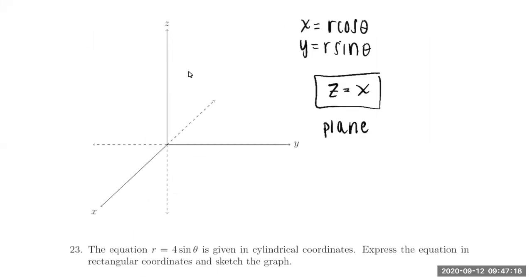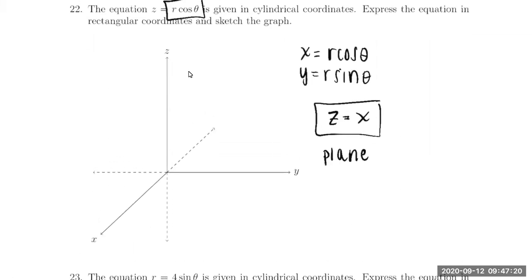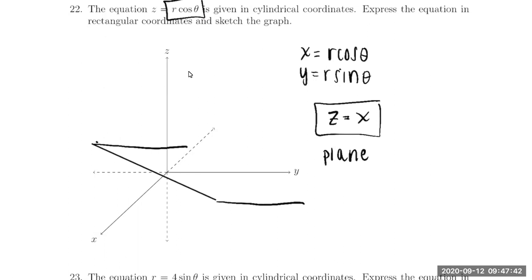Since everything is linear here, this is going to be a plane. This is a cylindrical surface because we're missing one of the variables. What we want to do is plot the line x = z in the xz-plane — that's just this diagonal line — and then extrude along the missing variable y. So here is the slant plane in this case.